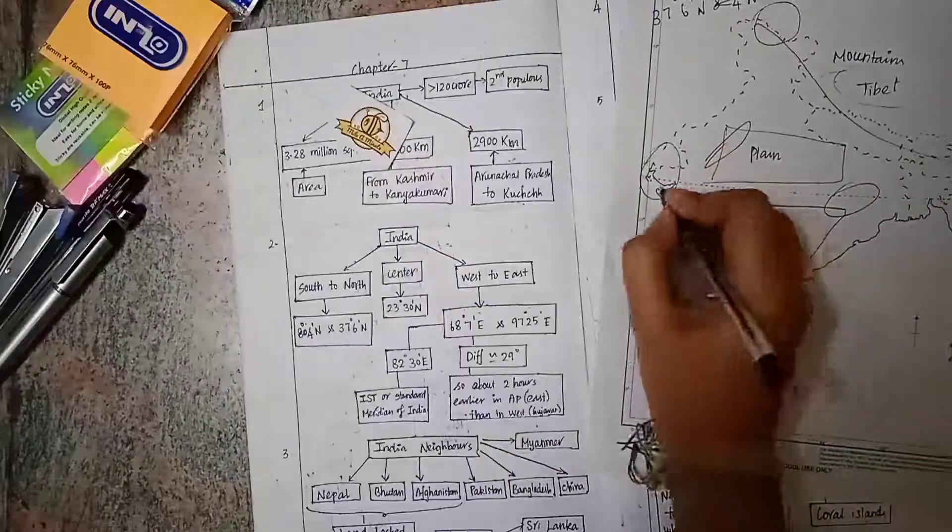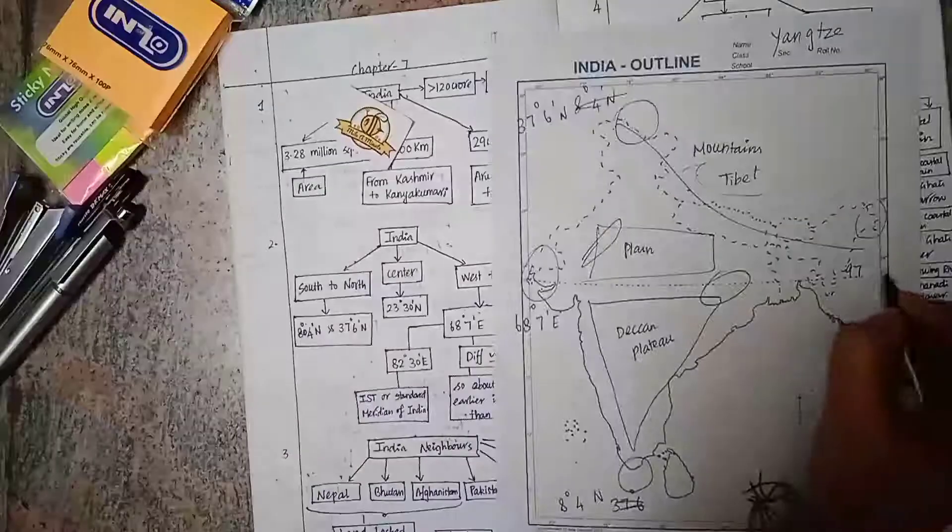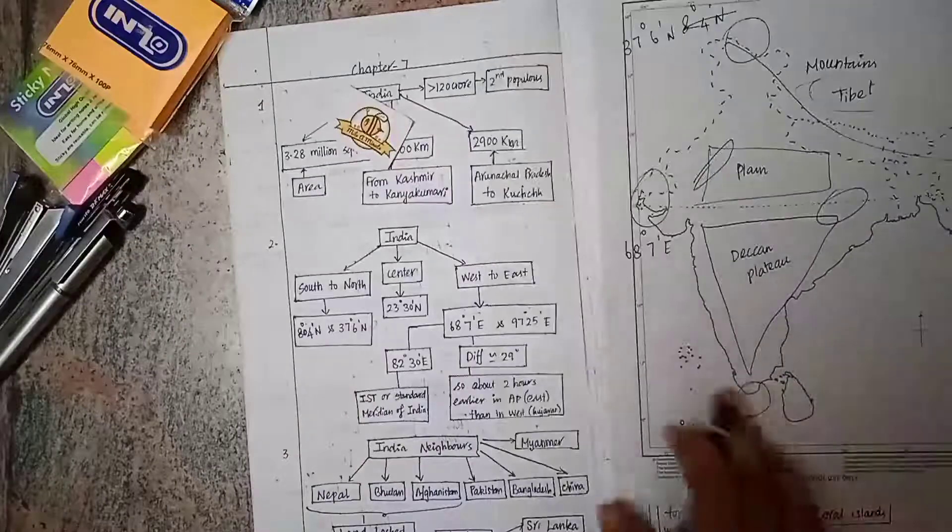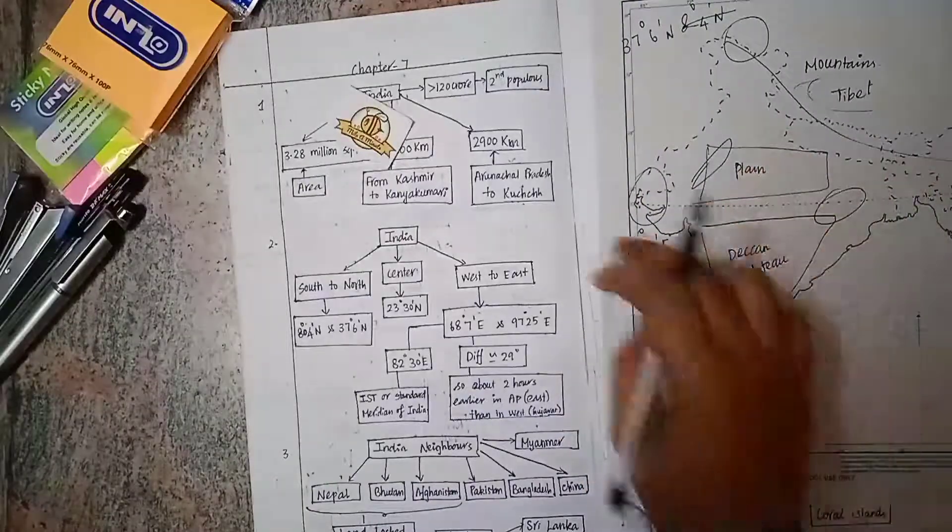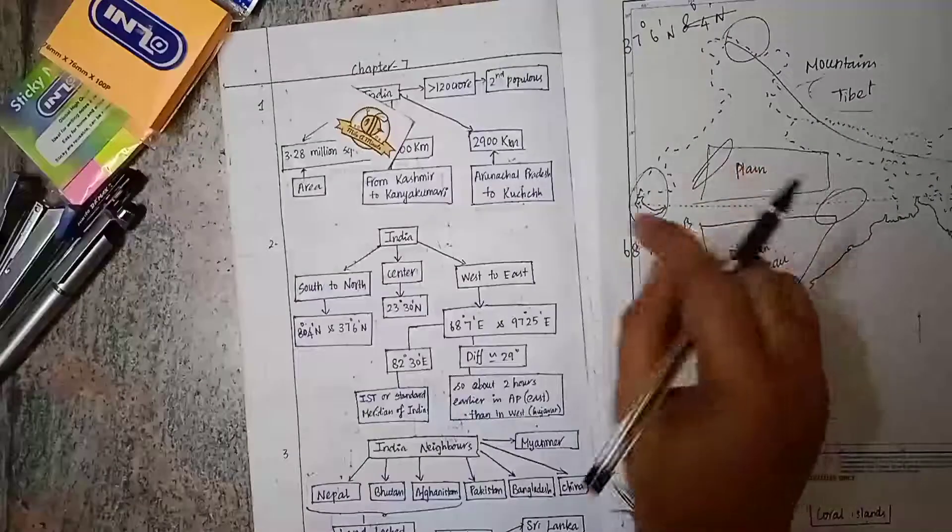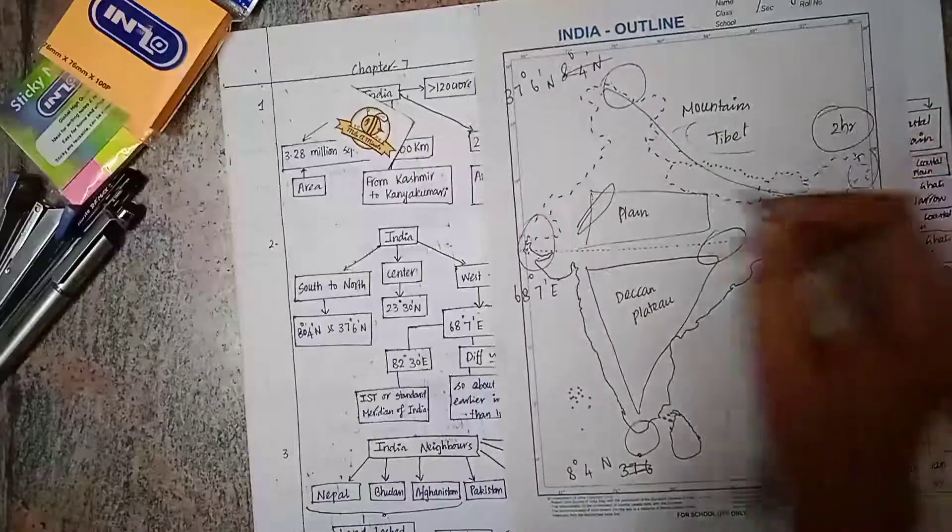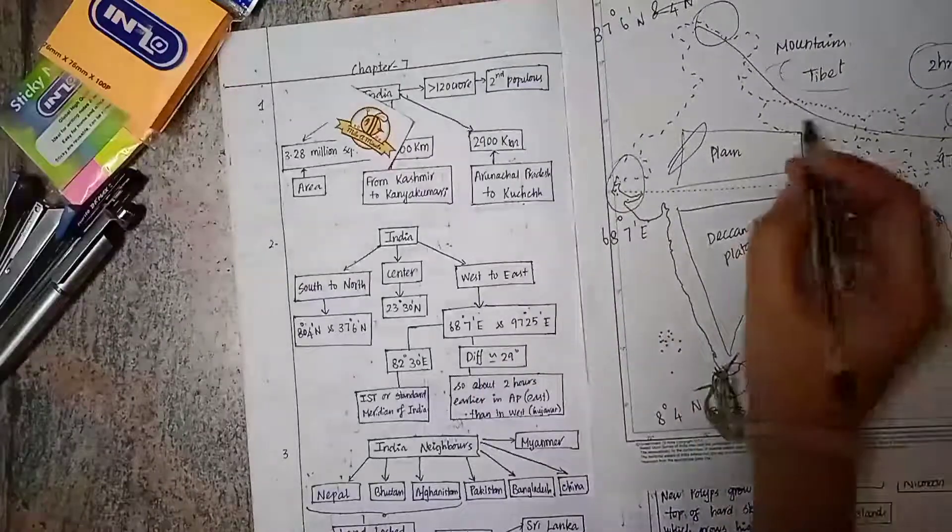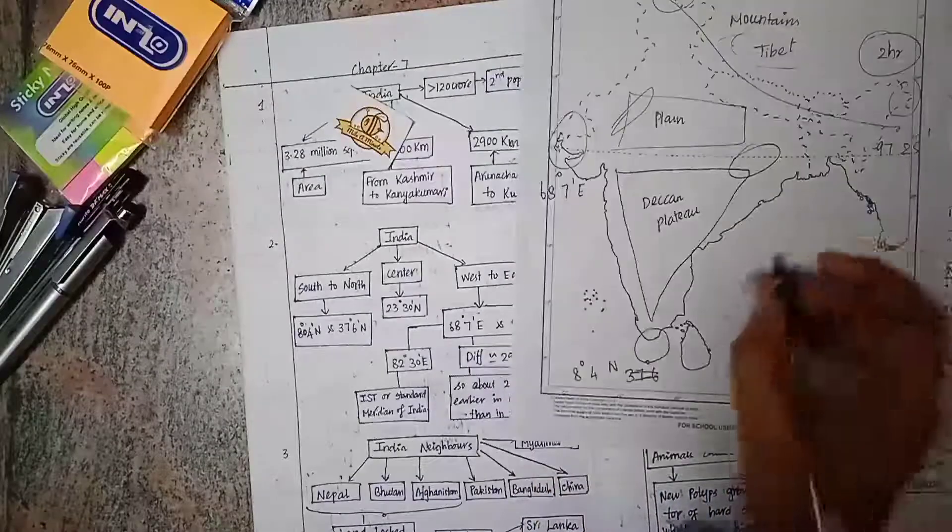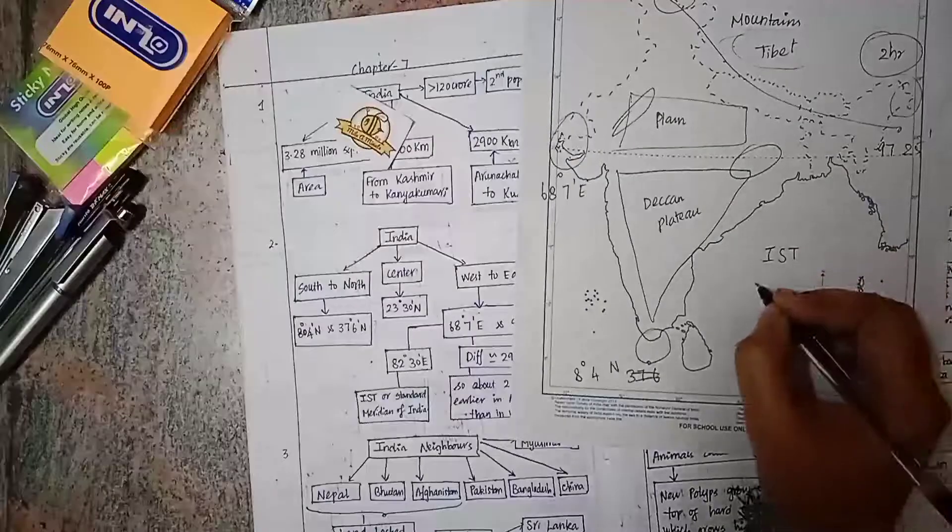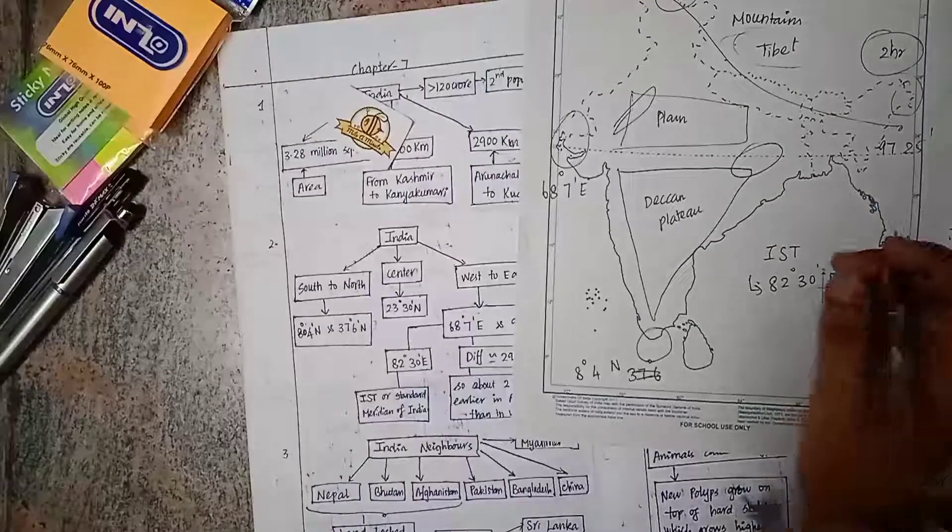From west to east, we have 68°7' east longitude on this side and 97°25' east on this side. The difference is almost 30 degrees. By this difference of 30 degrees, there's about 2 hours difference, so Arunachal Pradesh is 2 hours earlier compared to western Gujarat. Because of this great variation, we fix a single standard time for India at 82°30' east, the Indian Standard Time meridian.